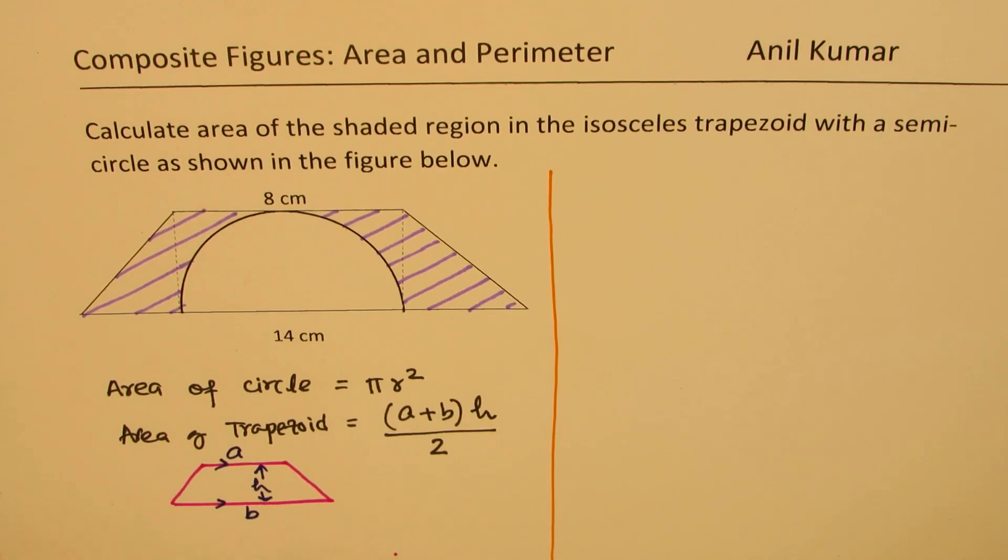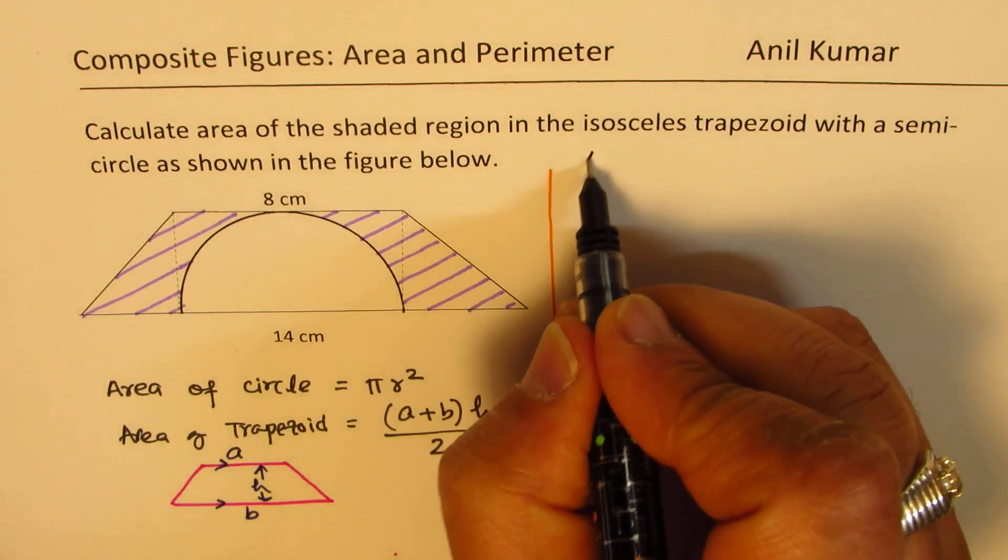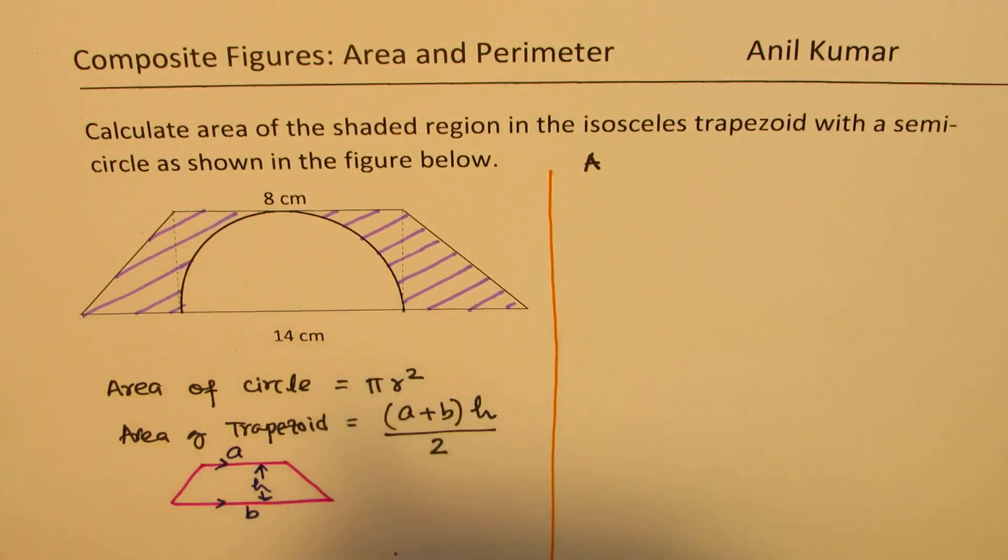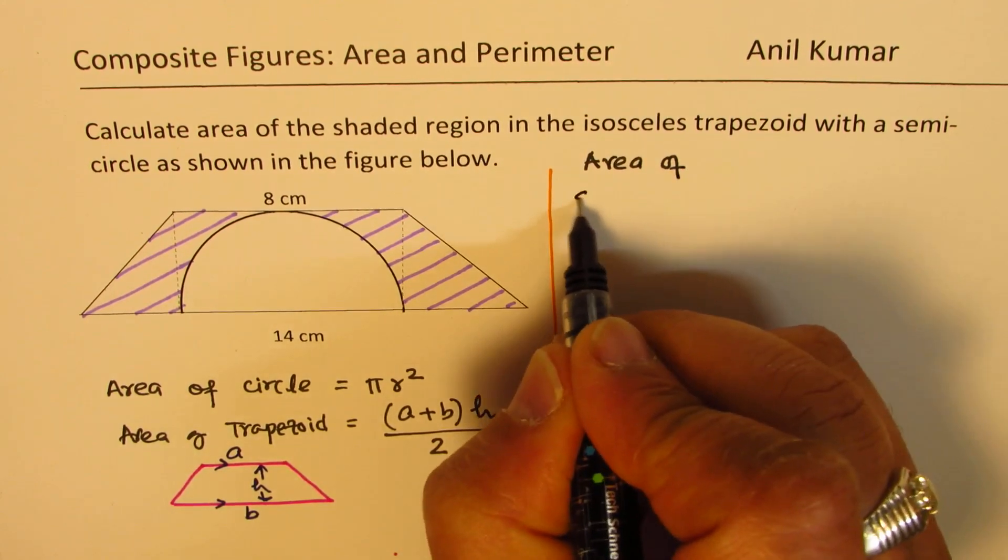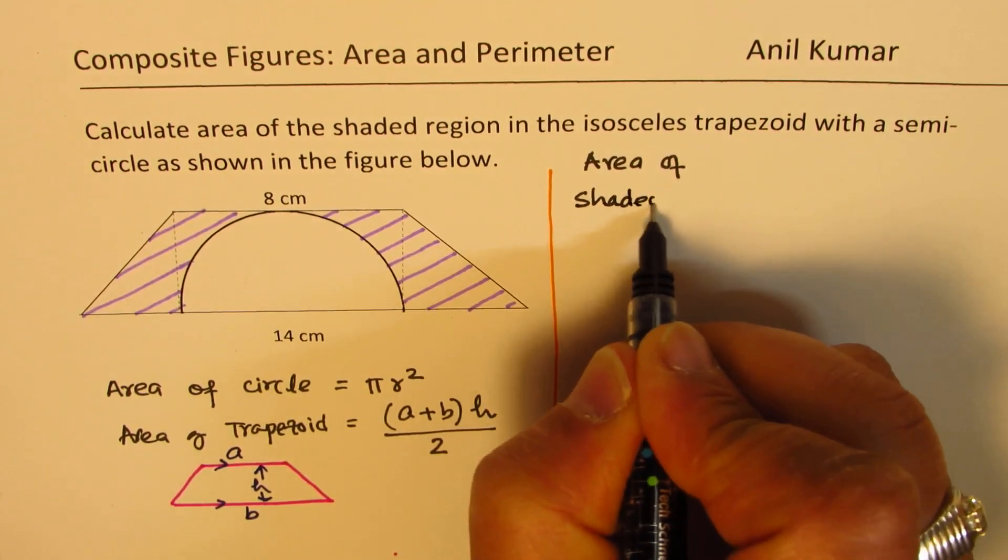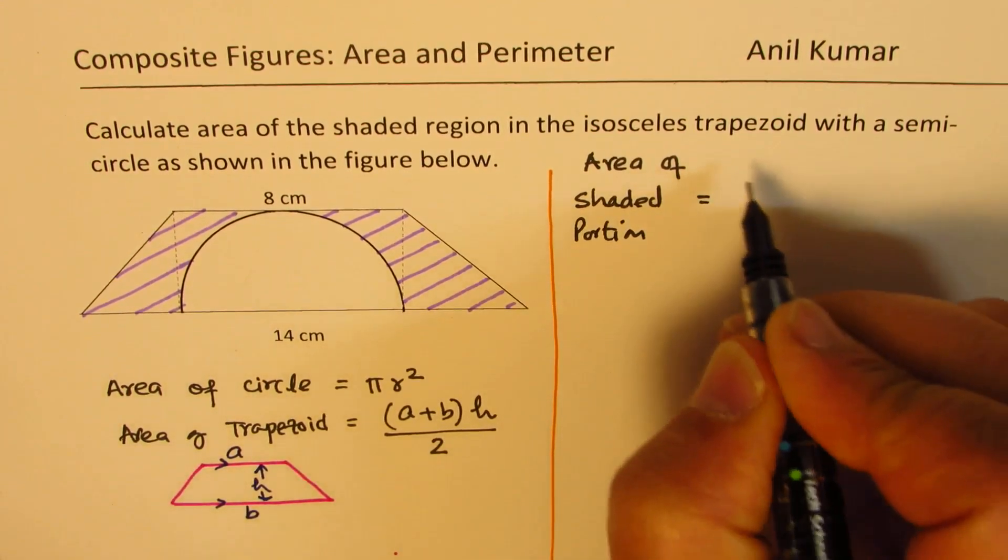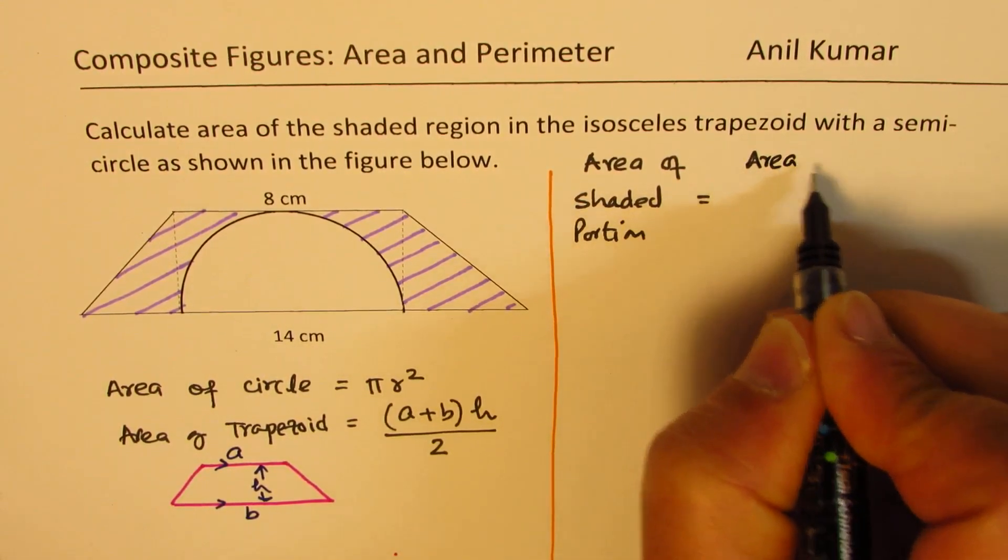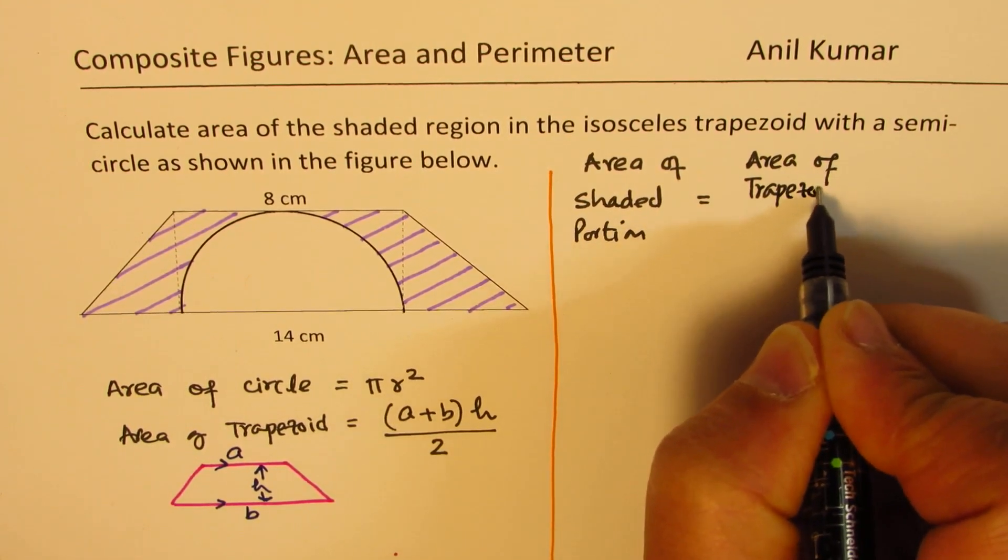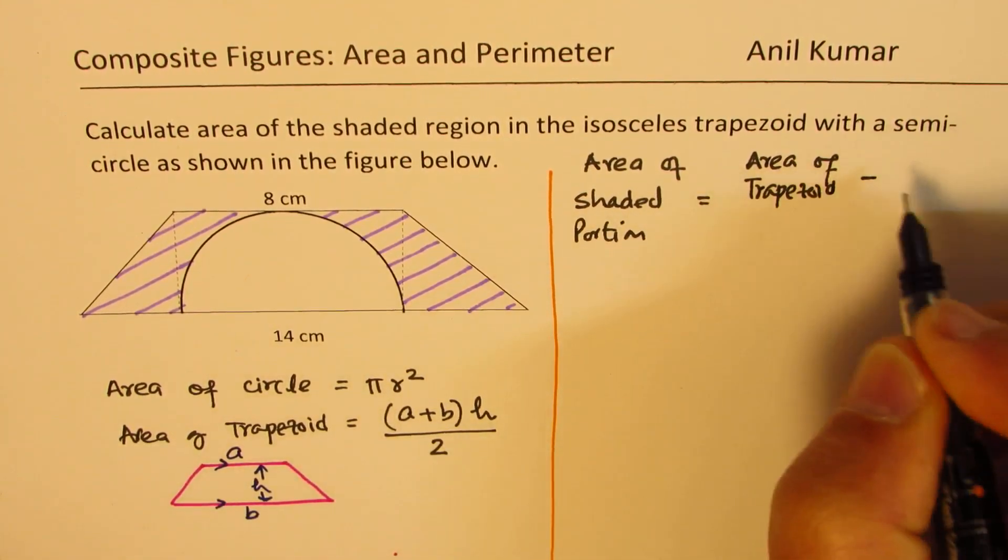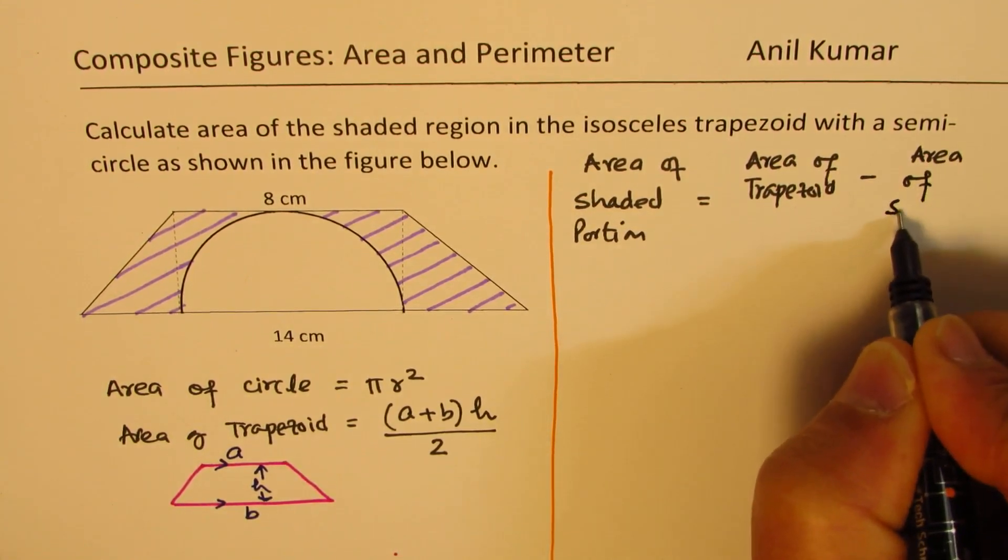Now to find the area, very clearly, we have to find the area of the trapezoid and take away area of semicircle, right? So we have area of the shaded portion, equal to area of trapezoid minus area of semicircle.